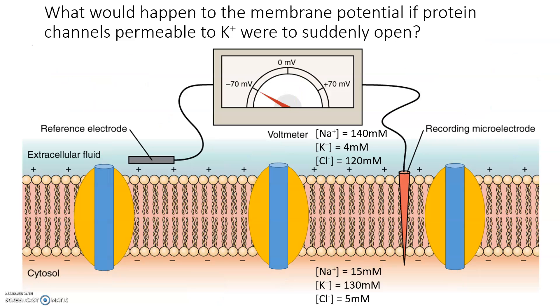What would happen to the membrane potential if protein channels specifically permeable to potassium were suddenly to open? Would it increase, decrease, or not change the membrane potential?